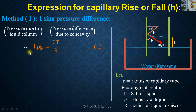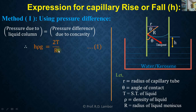In this formula, H is the height of the liquid column inside the capillary, rho is the density of the liquid raised inside the capillary, g is acceleration due to gravity, T is the surface tension of the liquid, and R is the radius of curvature of the liquid meniscus.